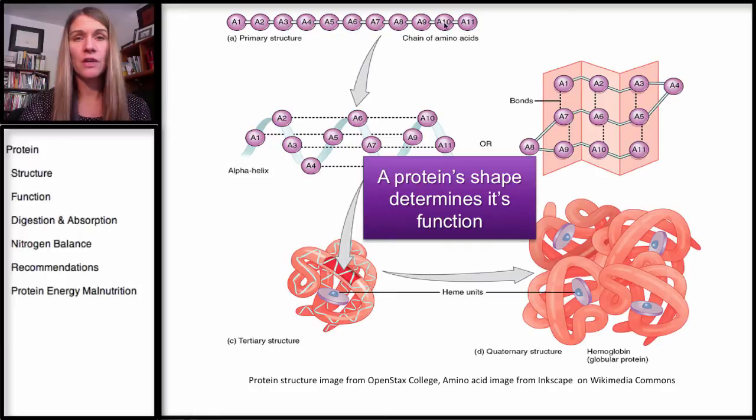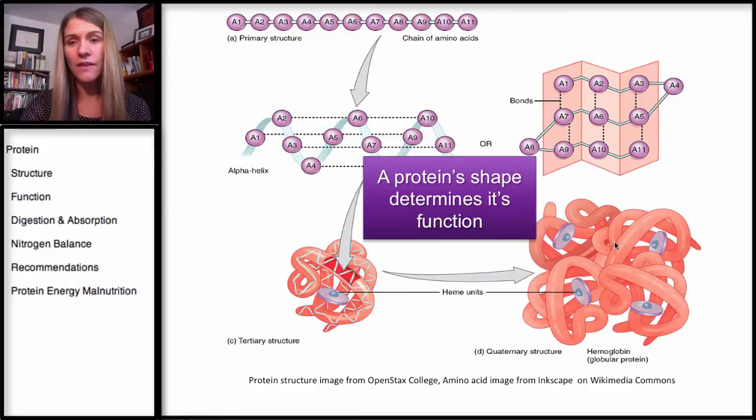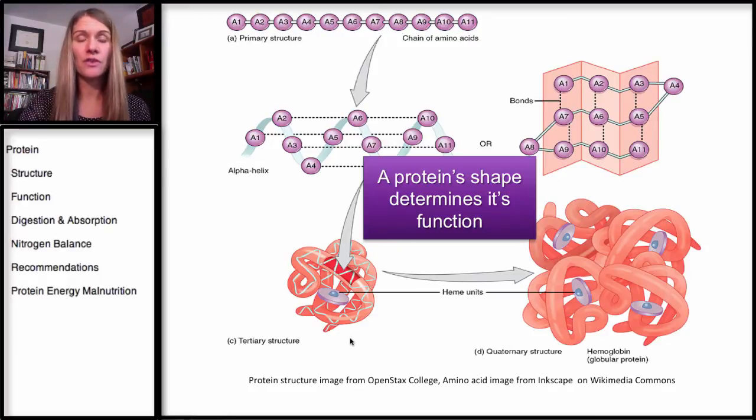So a key point here is that a protein's shape determines its function. This right here, this primary structure, even the secondary there, this protein has all the amino acids. It's not going to function, it has to coil and then fold on itself, and then generally join other units to make a functional protein.